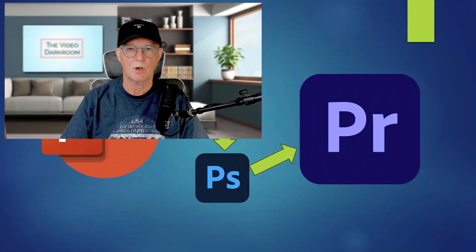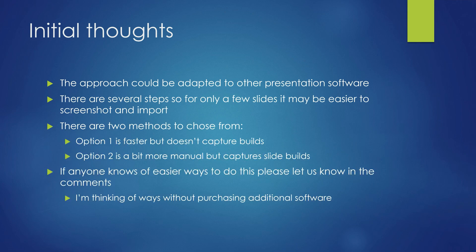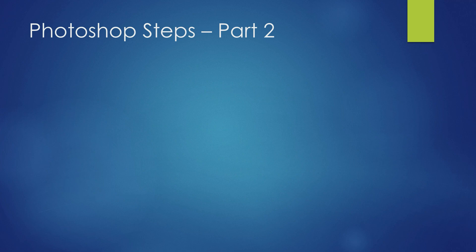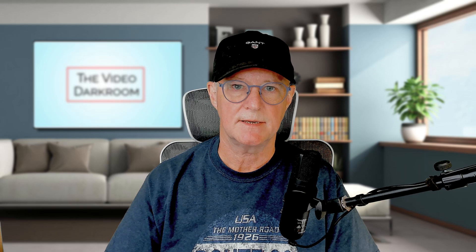The first method uses Adobe PDF files that you can create directly from PowerPoint. You convert that into a Photoshop file with all of the slides contained within it, and then bring that file directly into Premiere to add individual slides to the video. This method doesn't provide the opportunity to use builds — where slide elements appear one by one — but it's a simple and fast method, and if you don't need builds I recommend it.